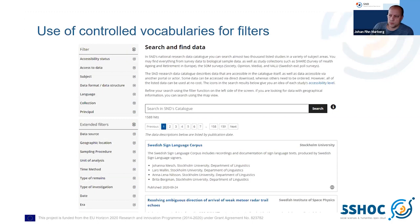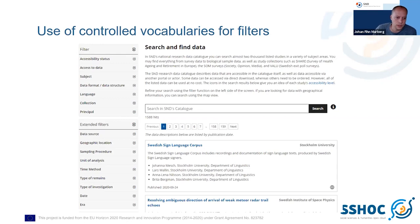In the search function we have a number of filters, and most of these come from various controlled vocabularies at SND. For instance, collection comes from a selection of a collection and not a controlled vocabulary, but the rest are actual controlled vocabularies that we have pre-selected terms for.